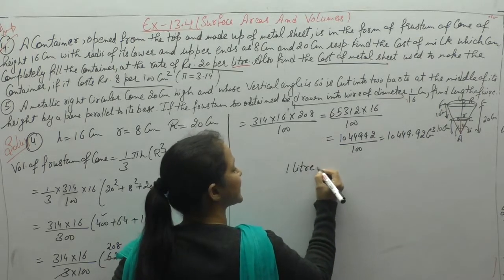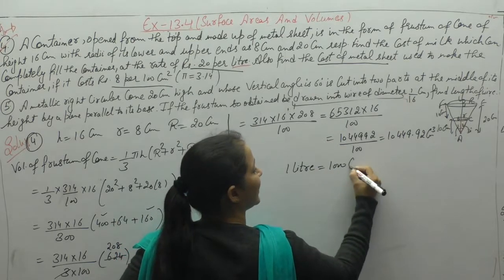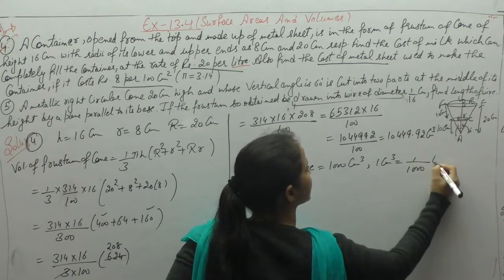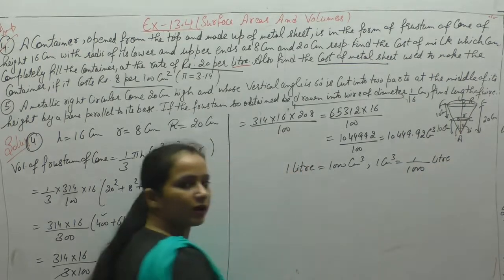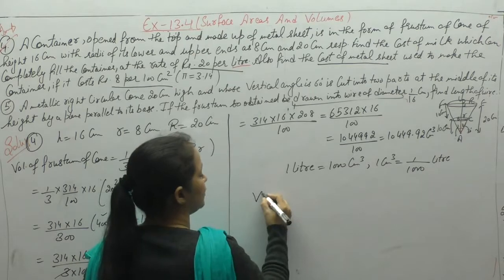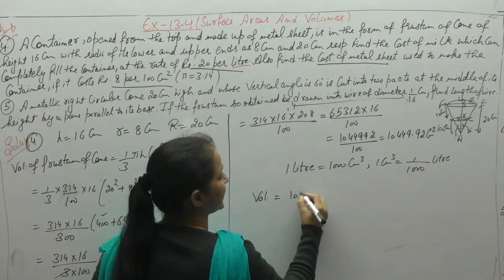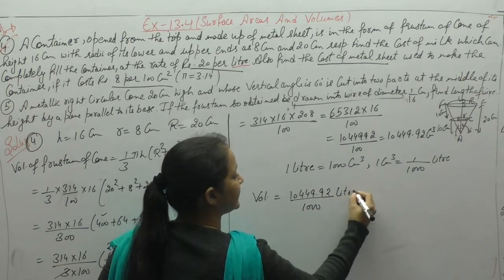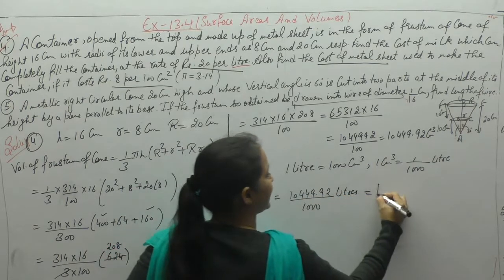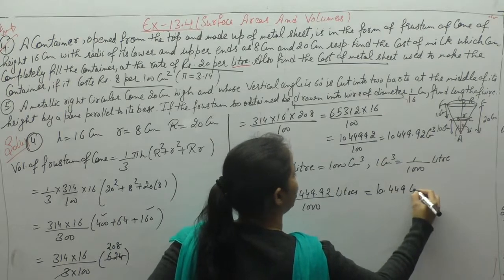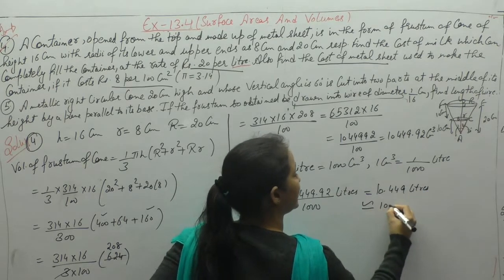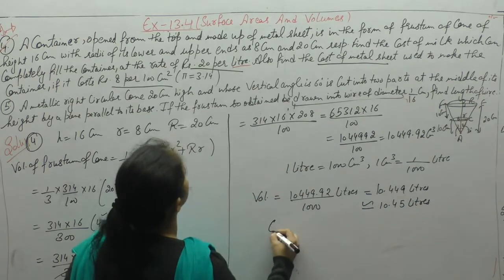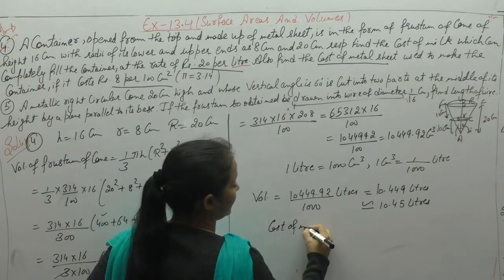Now converting to liters. Given that 1 liter = 1000 cm³, so 1 cm³ = 1/1000 liter. Therefore volume = 10449.92 ÷ 1000 = 10.449 liters, which is approximately 10.45 liters.